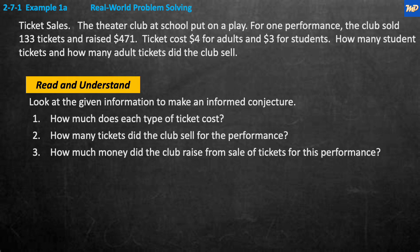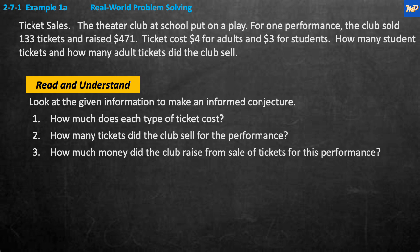Example 1A is a real-world problem about ticket sales. The theater club at the school put on a play. For one performance, the club sold 133 tickets and raised $471. The ticket cost for adults was $4 and $3 for students. As you probably know, adult tickets are usually more than student tickets. How many student tickets and how many adult tickets did the club sell?